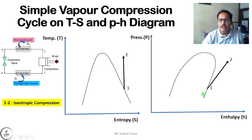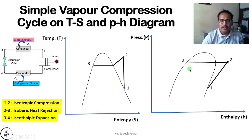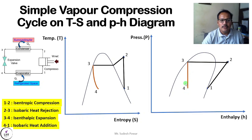In process 1 to 2, work input is supplied to the vapor compression cycle. Process 2 to 3 is isobaric heat rejection: on the TS diagram it is shown as process 2 to 3, and on the PH diagram it is a horizontal line at constant pressure. Process 3 to 4 is isenthalpic expansion in the expansion valve: on the TS diagram it is a curved line, and on the PH diagram it is a vertical straight line. Process 4 to 1 is isobaric heat addition in the evaporator, visible on both the TS and PH diagrams.